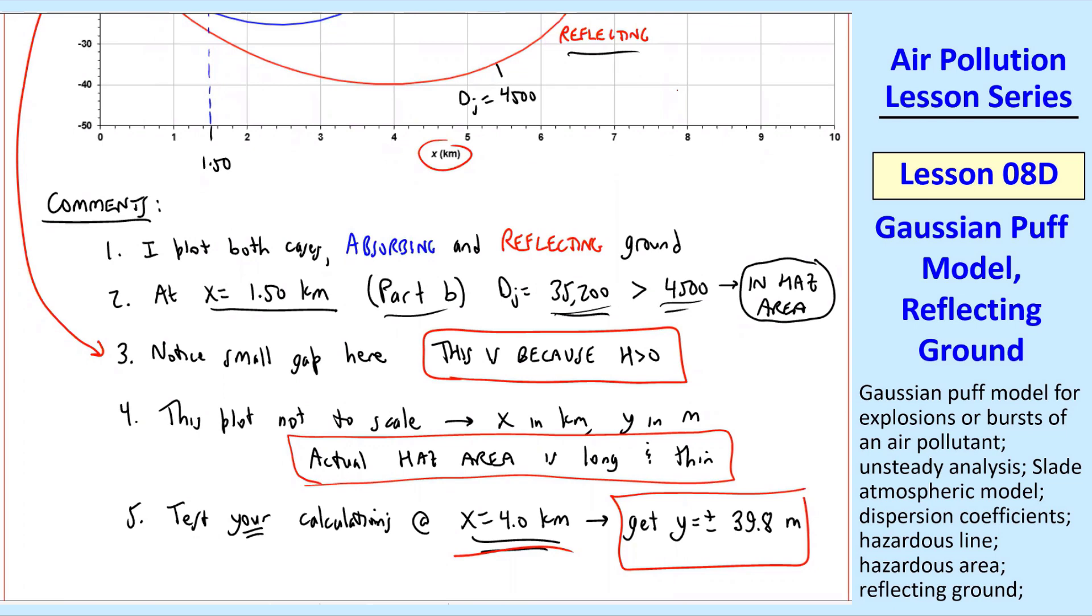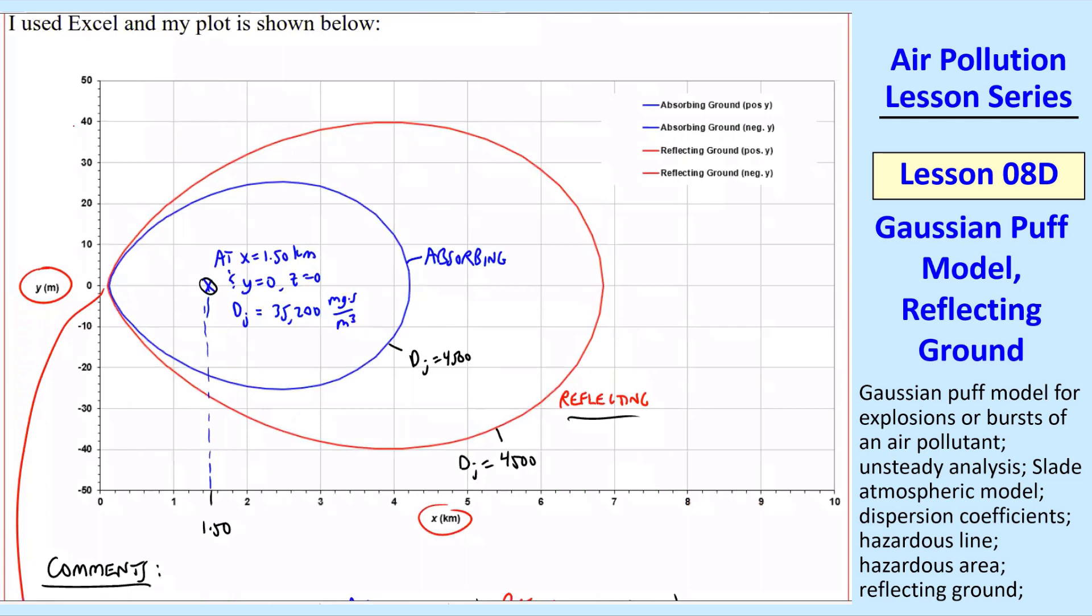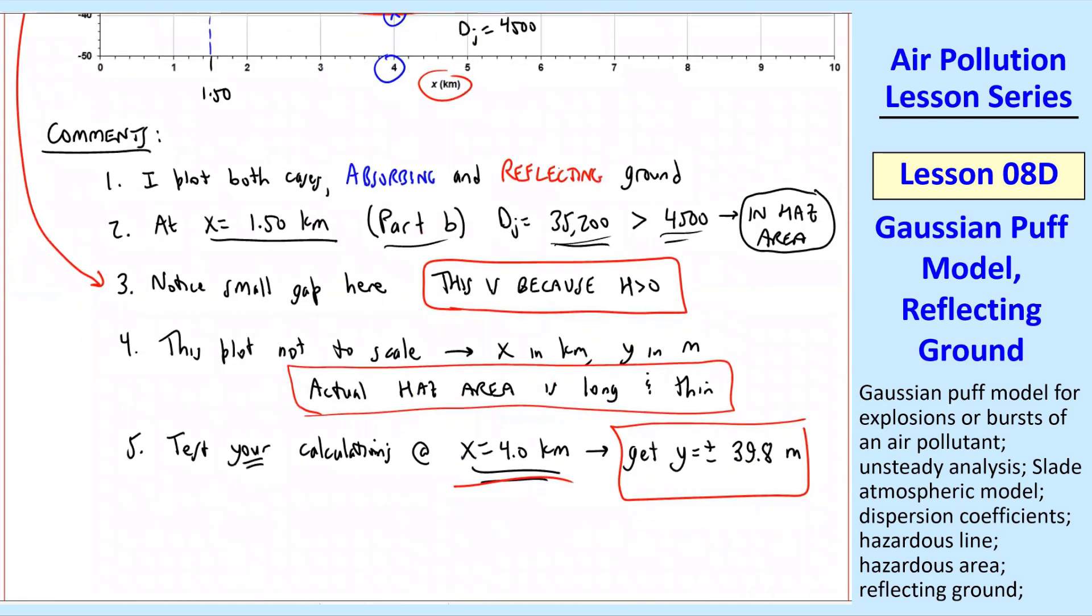Comment five, you can check your calculations at X equal 4 kilometers. I picked that because it lands at almost exactly 40. I would advise you to run this through your code. At 4 kilometers, you should get Y equal plus or minus almost 40. When I looked at my Excel spreadsheet, it's actually 39.8 to three significant digits. Make sure you get that number with all these parameters at X equal 4 before you attempt any quizzes or homeworks. Make sure you can repeat what I'm doing here.